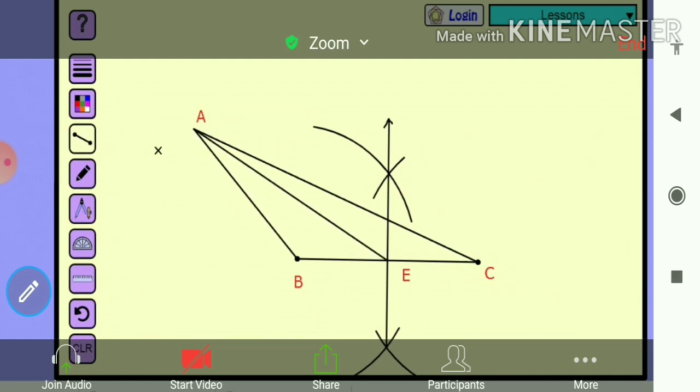Now take again more than half distance. We have taken more than half distance and we are drawing arcs on the two sides. Now similar process we are going to do with A.